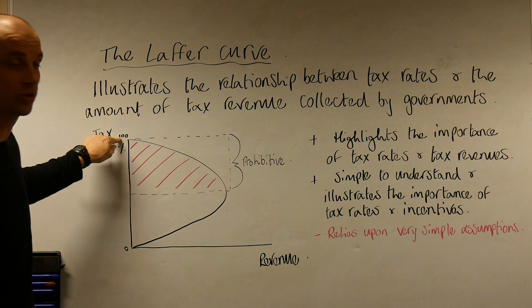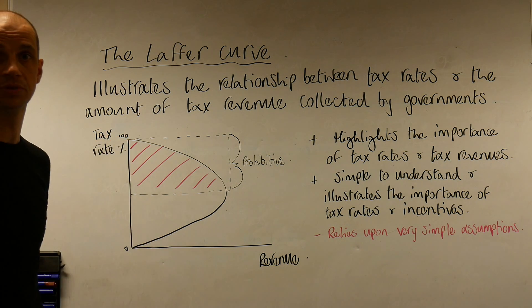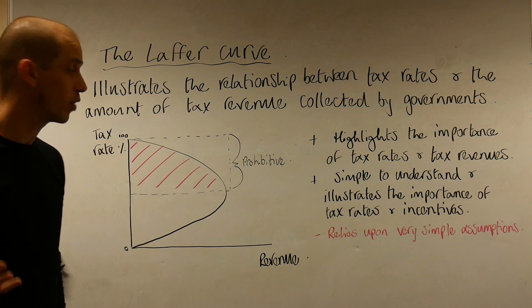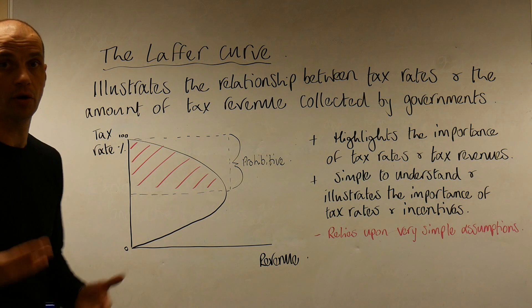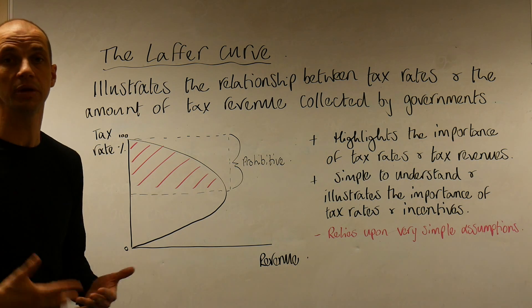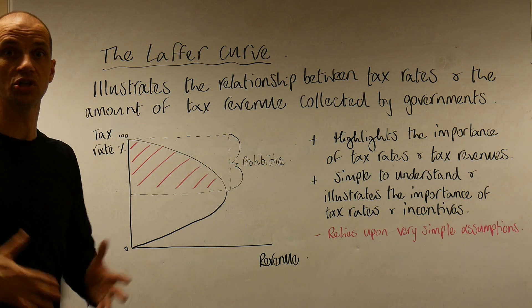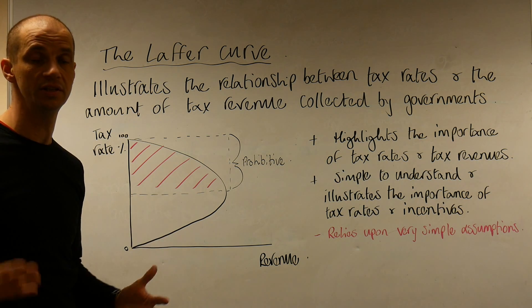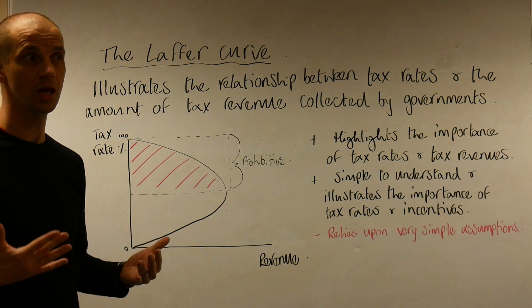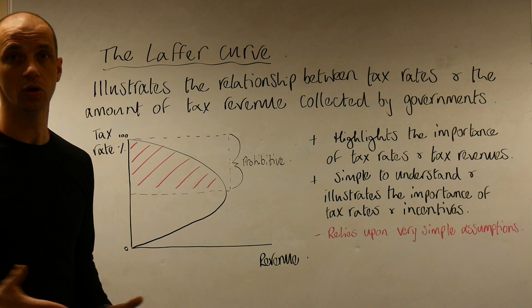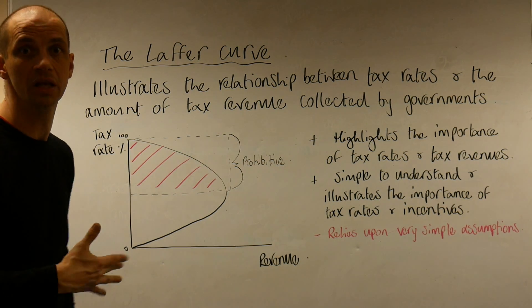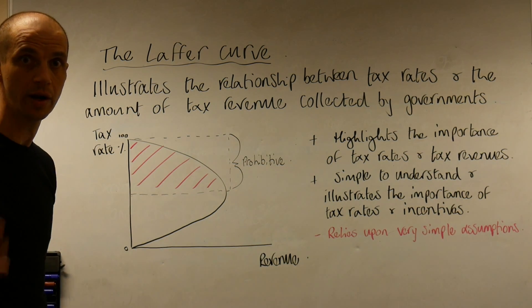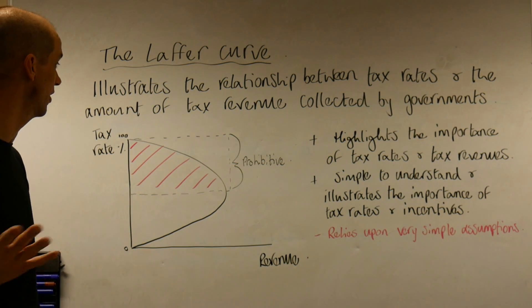We can also see that a 100% rate of tax results in zero revenue, because there are just no incentives to actually undertake work — all of your work would be handed straight over to the government.